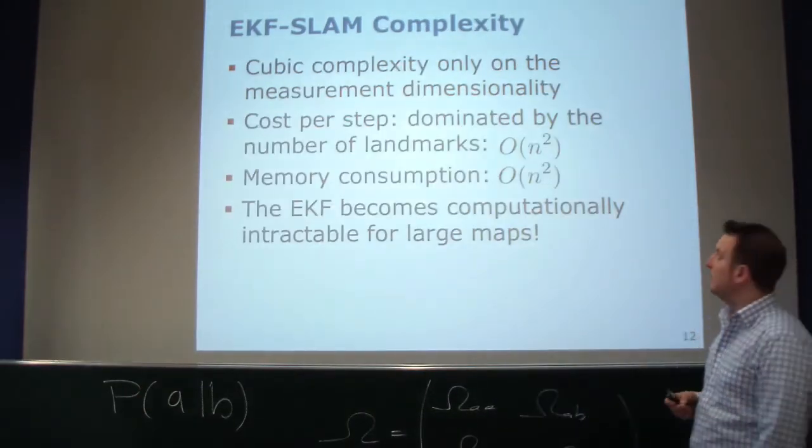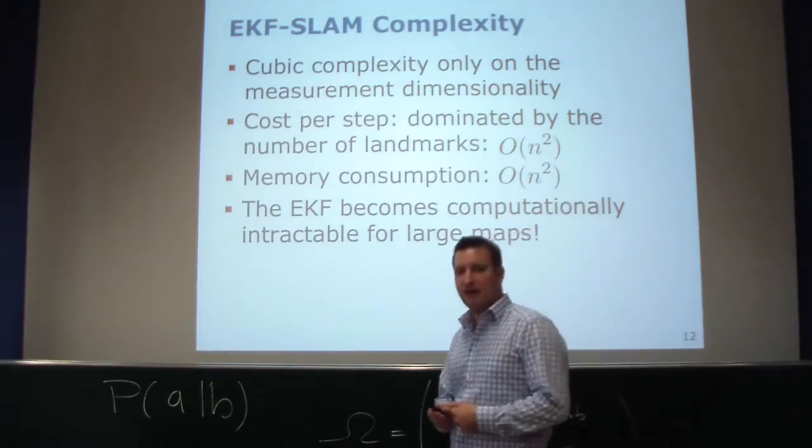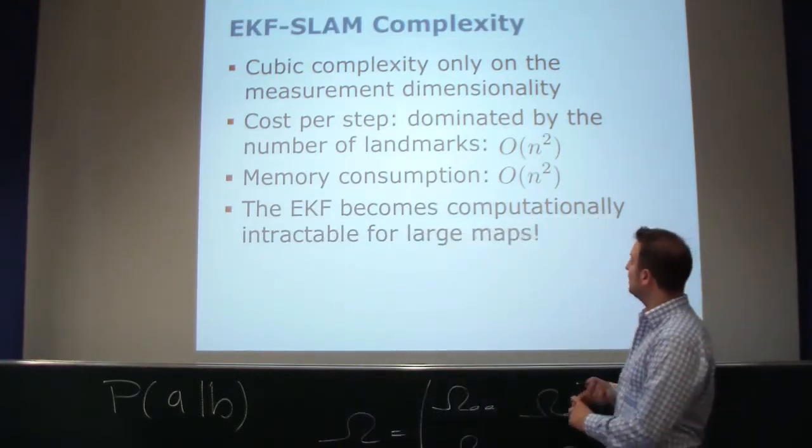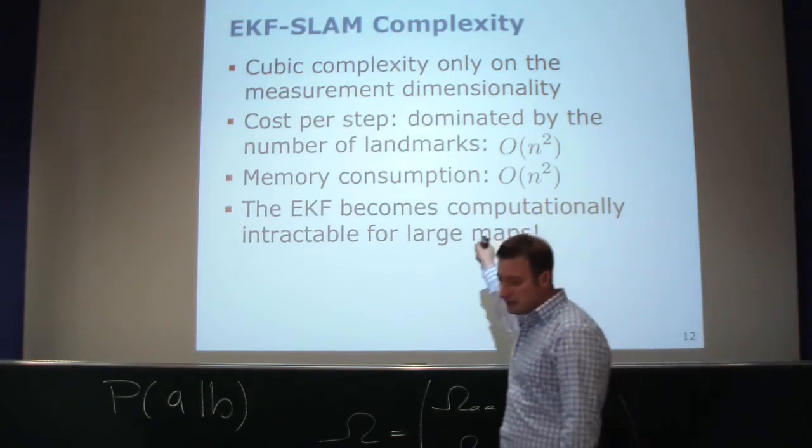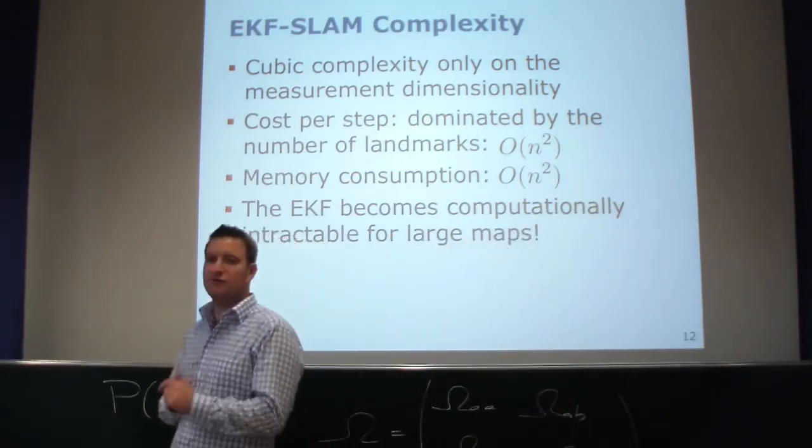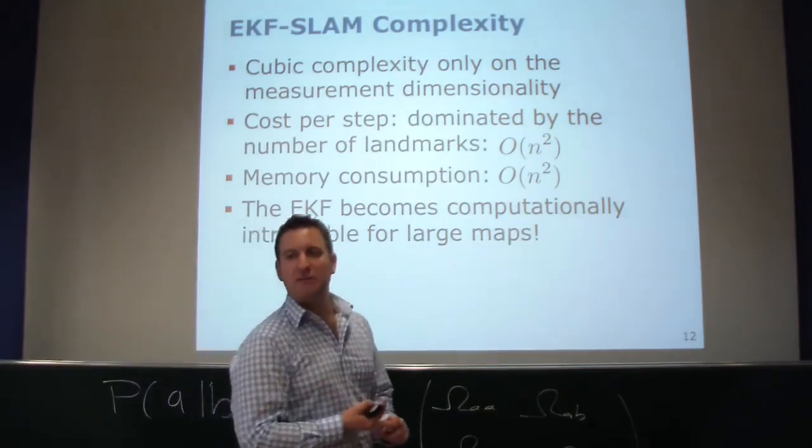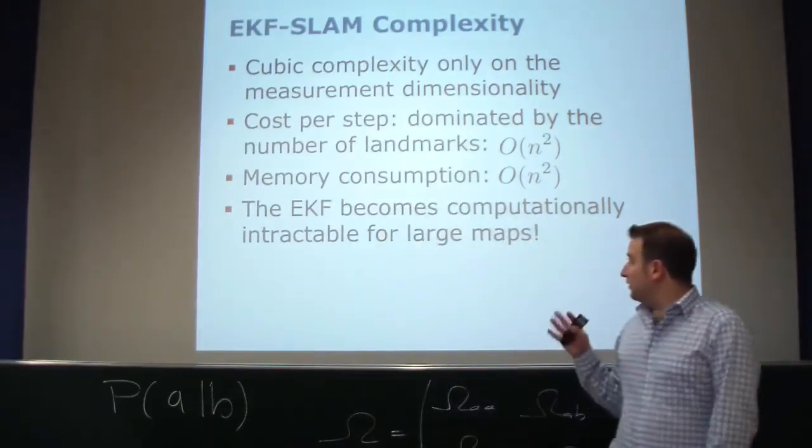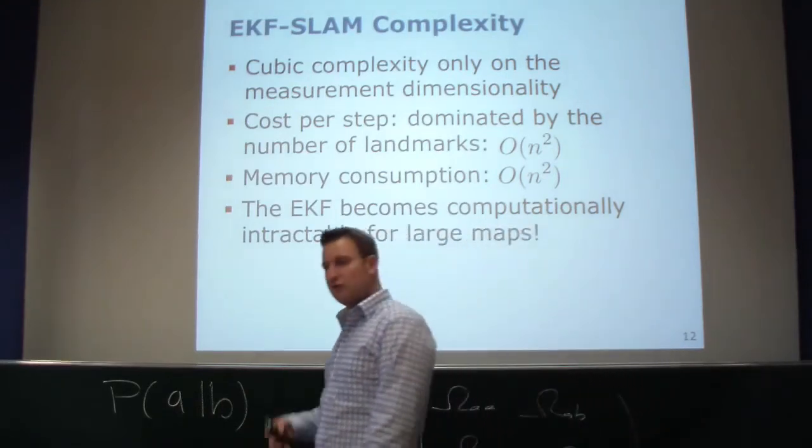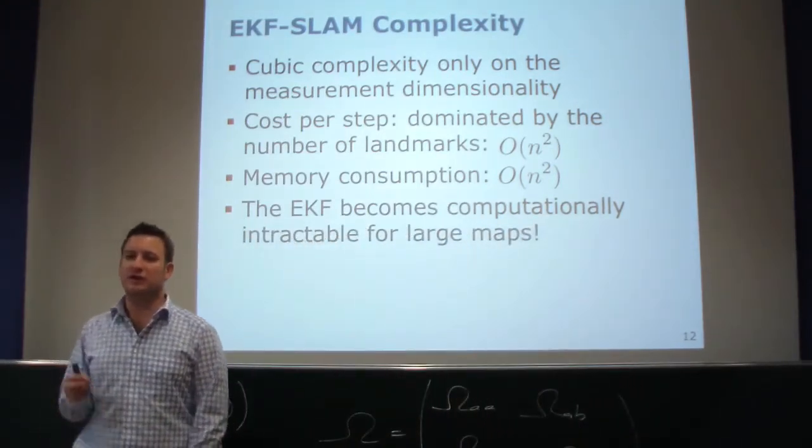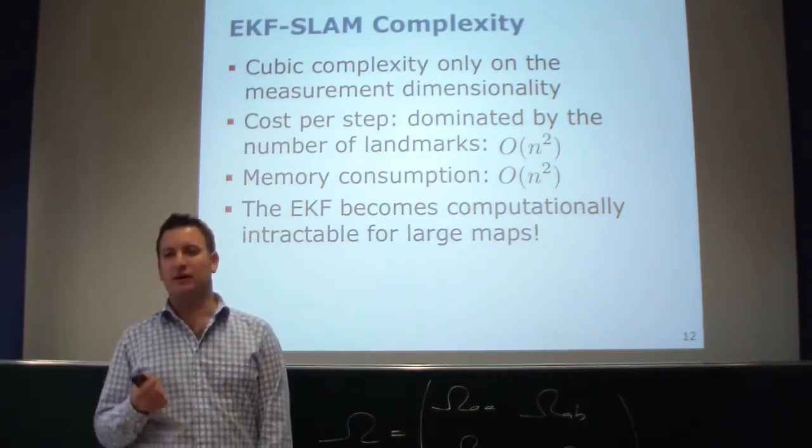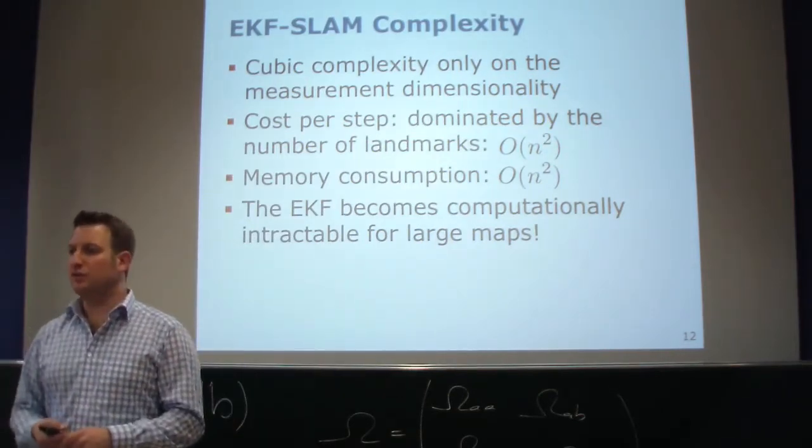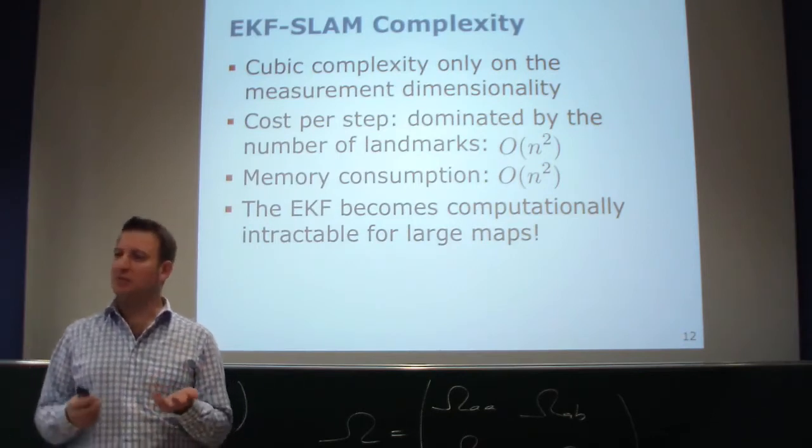The EKF SLAM is basically applying the EKF in the context of a SLAM problem. It has a cubic complexity only on the measurement dimensionality. As I said, the limiting factor here is the quadratic complexity in the number of landmarks. It also needs quadratic memory complexity because you need to store the covariance matrix. So the EKF is the first thing you can do, a straightforward solution. It works well as long as your nonlinearities are not too bad, but it also becomes intractable if the number of landmarks grows and grows. At some point in time, the quadratic complexity fails you.